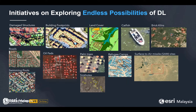Here are some initiatives exploring the endless possibilities of deep learning. At Esri, we develop tools for object detection based on your organization's needs — for example, extracting building footprints and embedding information about new structures. There is also a catfish study where a drone was flown to gather full motion video, then all catfish were automatically extracted and embedded on a monitoring platform such as an ArcGIS Dashboard.